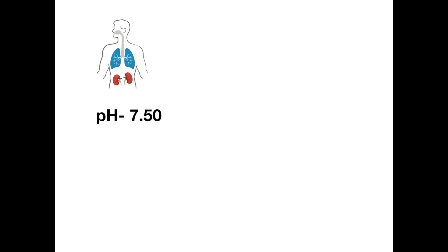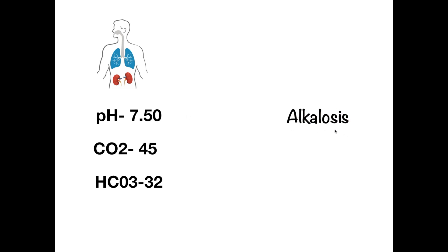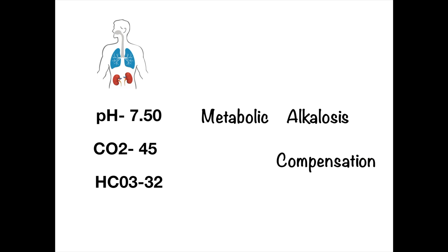Next: pH is 7.50, CO2 is 45, and bicarbonate is 32. 7.50 shows that this is alkalosis. Let's see what's causing the problem. CO2 is 45 — that's within normal range of 35 to 45, so that's not causing the alkalosis. Bicarbonate is 32, and the normal range is 22 to 26, so what's causing the alkalosis is the elevated bicarbonate — this is metabolic alkalosis. CO2 is still within normal range, so there is no compensation.